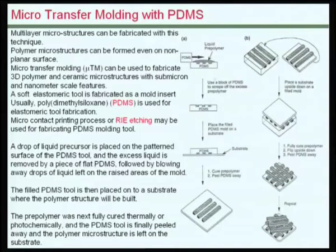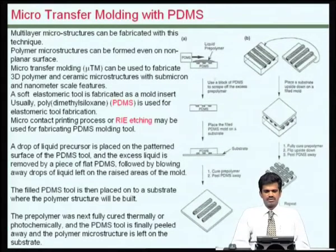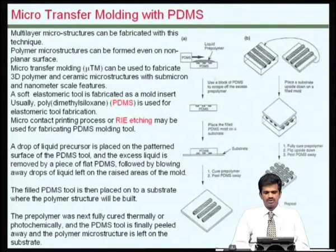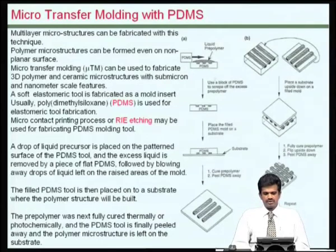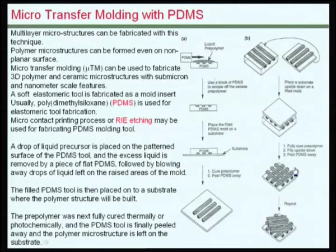A somewhat similar approach is known as micro transfer molding. In this case, multilayer microstructures can be fabricated — polymeric materials are formed on even non-planar surfaces. This can be used for three-dimensional structures and even extended for ceramic microstructures at micron scales. PDMS is used once again: we first make the mold and then use PDMS to create the PDMS-based structure, and then use this for repetitive production.